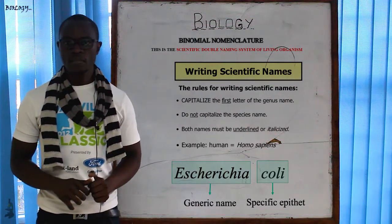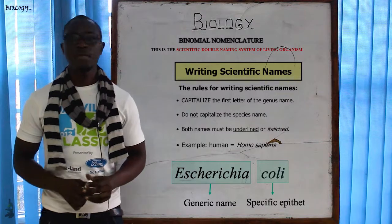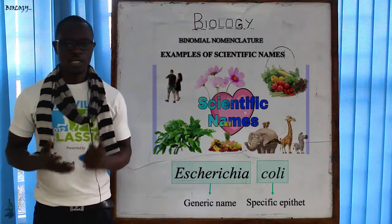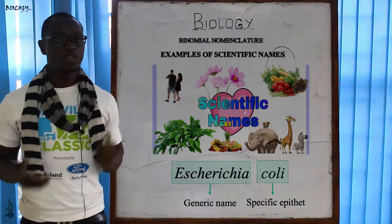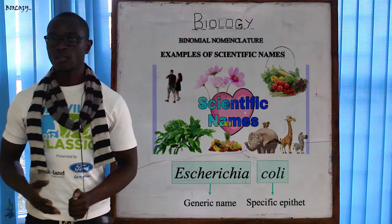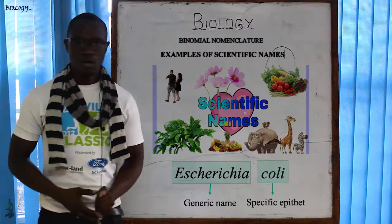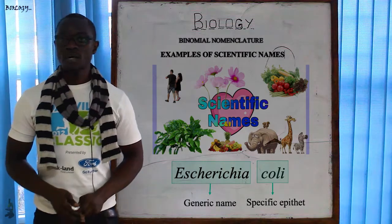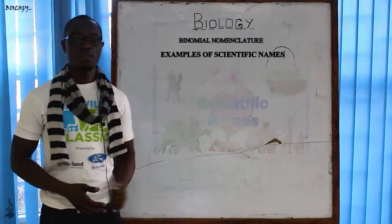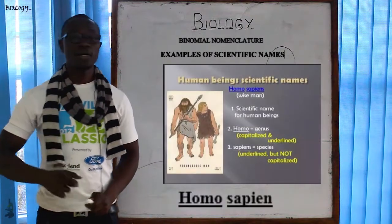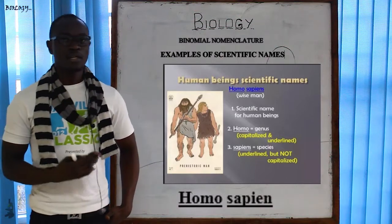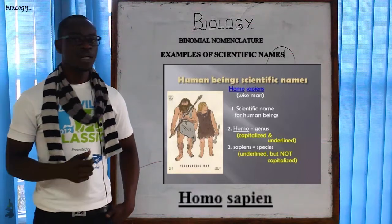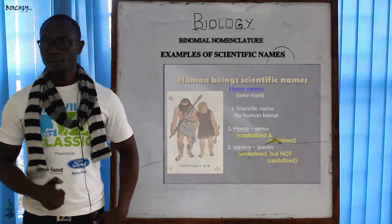These names form the basis of scientific naming for any organism, be it plants or animals. Since biology is the study of living organisms, all living organisms have a scientific name. For example, the scientific name of a human being is Homo sapiens — Homo is the genus and sapiens is the species.